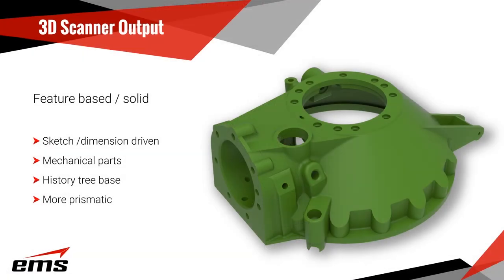The final and most popular type of output is feature-based solid modeling. This works great for mechanical parts because it's primarily sketch or dimension-driven — how most mechanical CAD software works today. You create a sketch, add parametrics or dimensions to control it, making everything perpendicular, parallel, and of a specific size, then extrude, loft, or sweep that sketch. This involves multiple sketches — what we call history tree or feature-based modeling — and they're dimensionally controlled.